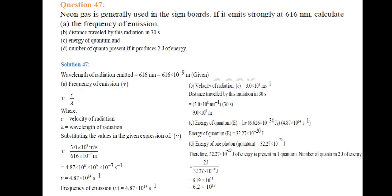Next part: energy of a quantum. Energy = hν = 6.626×10⁻³⁴ J·s × 4.87×10¹⁴ s⁻¹ = 32.27 × 10⁻²⁰ Joules. Therefore 32.27 × 10⁻²⁰ Joules is the energy present in one quantum.